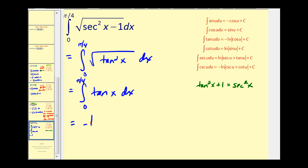So we're going to have negative natural log absolute value of cosine u. In this case u is just x, so we'll have cosine x. And this is a definite integral, so we'll have to evaluate this at pi over four and zero.